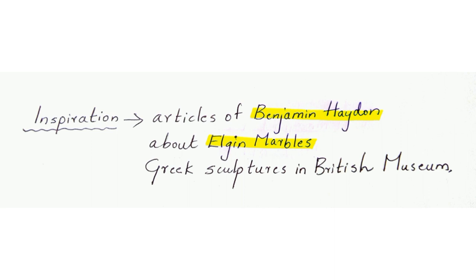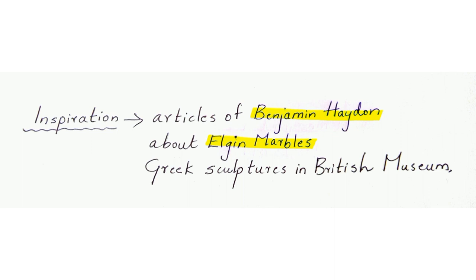All these sculptures are kept in the British Museum. There are articles written about the Elgin Marbles by Benjamin Hayden, and Keats came across these and got inspired to write 'Ode on a Grecian Urn.' He wrote and published the poem in 1819, anonymously, in the Annals of the Fine Arts.